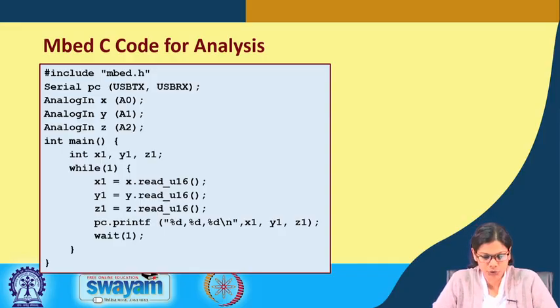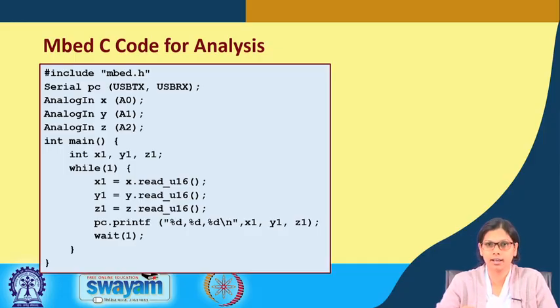Then goes the main function. In the main function we define three variables x1, y1 and z1 where we are reading the analog value using the function x dot read underscore u16, y1 will be y dot read underscore u16 and z1 will be z dot read underscore u16. And what we are doing, the serial communication with the name PC that we have already made will be used to print the values of this x, y and z coordinate which is stored in variable x1, y1 and z1. This is going in a while loop, but after 1 second it will get printed. It will wait for 1 second and again it will do the same process.